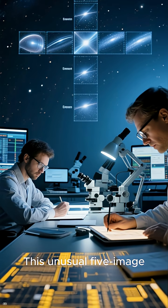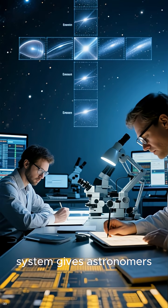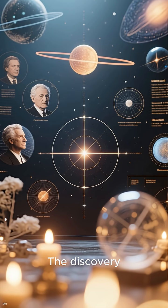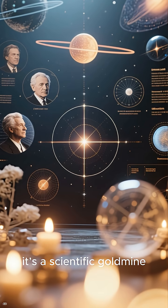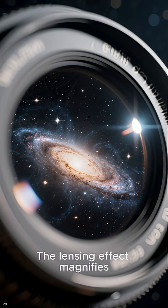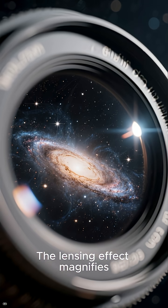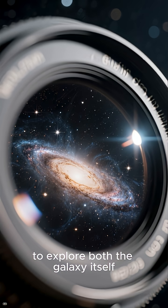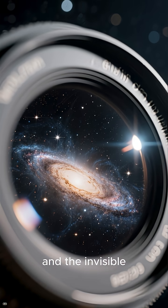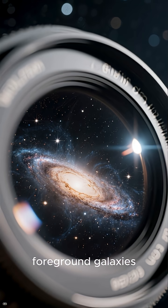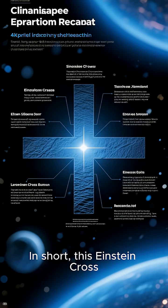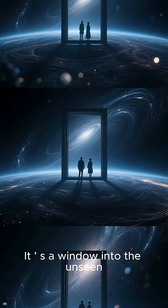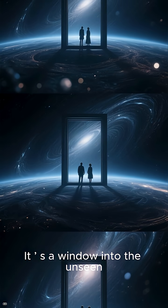This unusual five-image system gives astronomers a unique chance to study that hidden structure. The discovery doesn't just look spectacular, it's a scientific gold mine. The lensing effect magnifies the distant galaxy, allowing researchers to explore both the galaxy itself and the invisible matter that surrounds the foreground galaxies. In short, this Einstein cross isn't just a cosmic curiosity. It's a window into the unseen universe, and a rare opportunity to study dark matter in action.